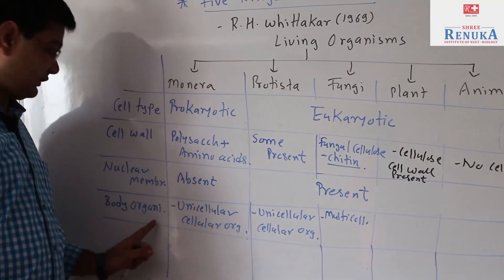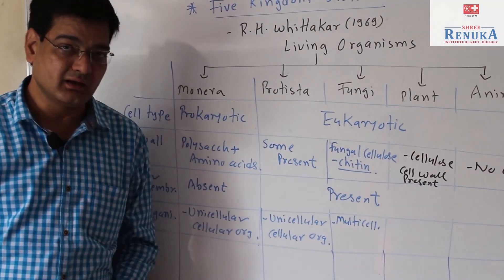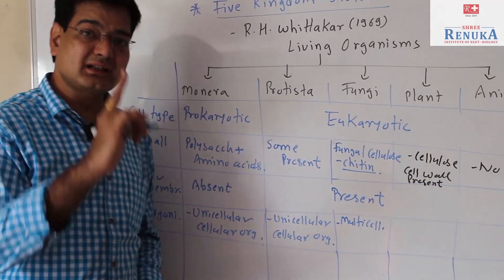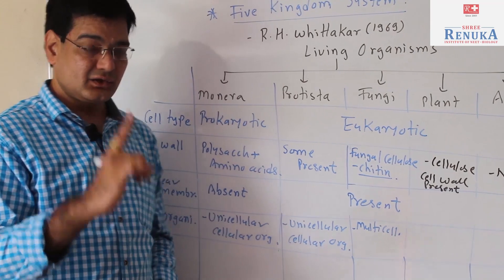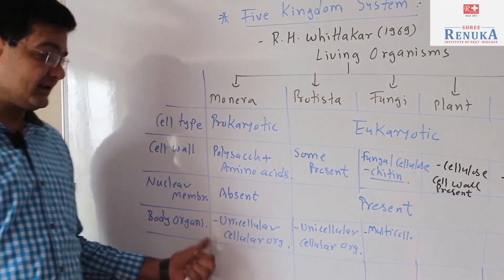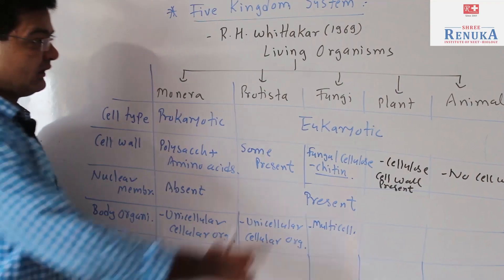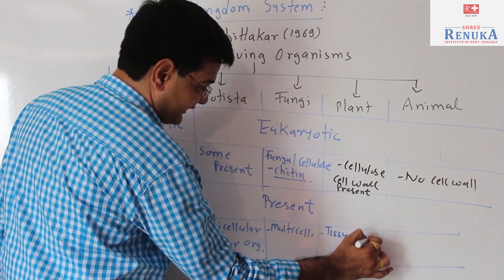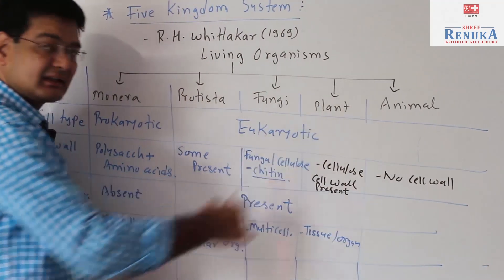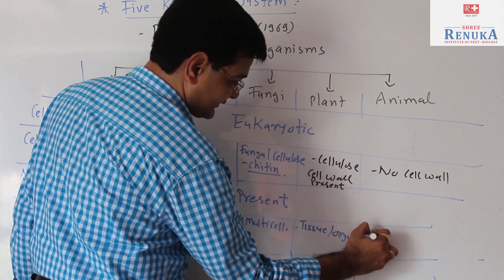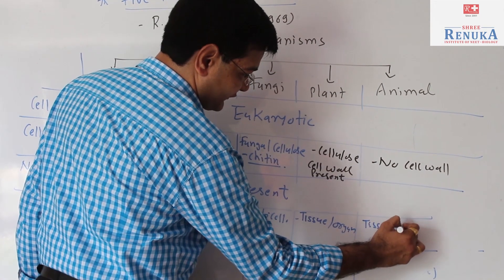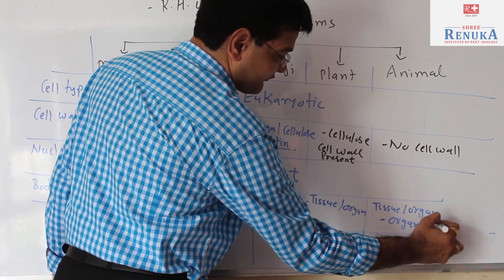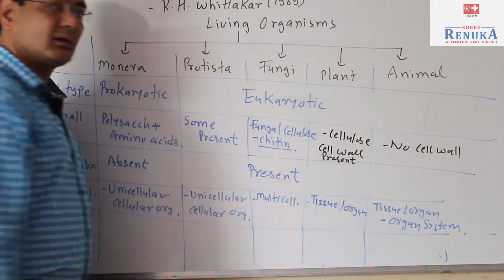In the case of fungi, body organization is multicellular — but remember, exceptionally, yeast is a unicellular fungi, so in the case of yeast the body organization is cellular. In the case of plants, tissues and organs are found. In the case of animals, tissues, organs, and organ systems are also found.